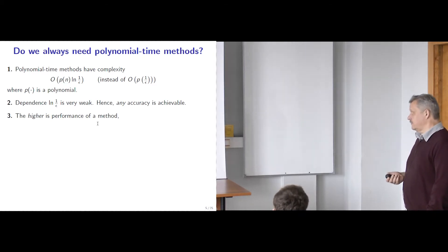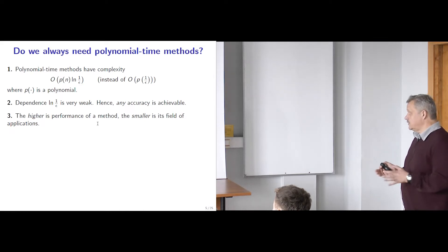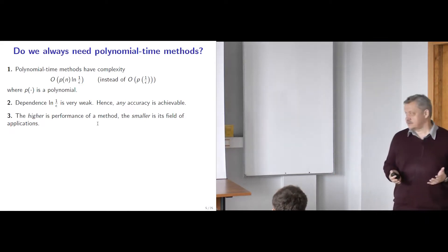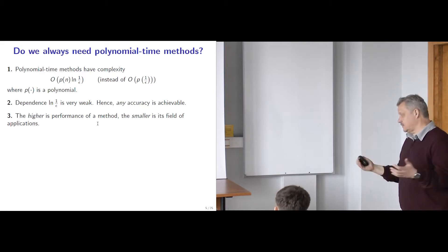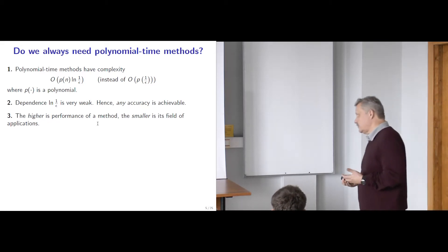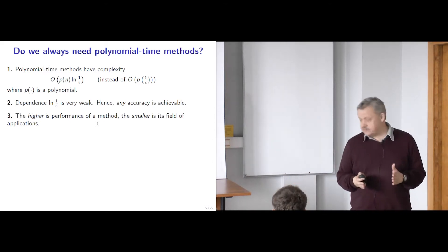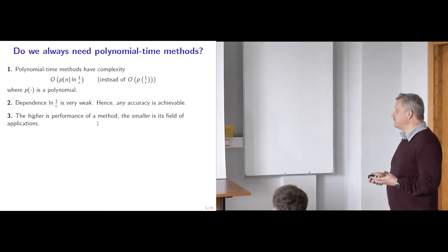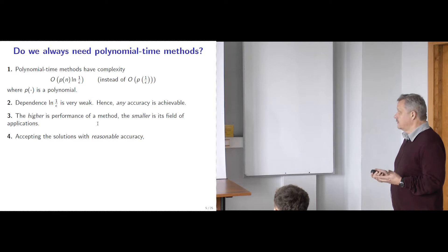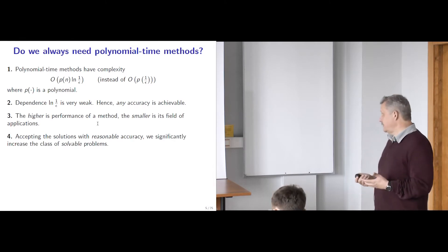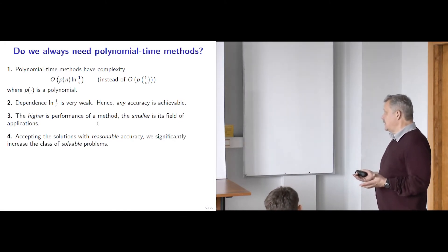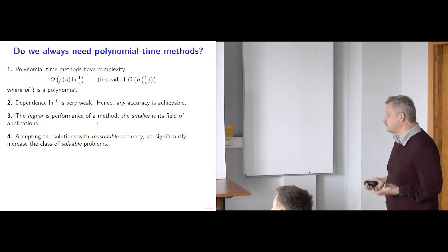From a general philosophical viewpoint, it is clear that the higher the performance of any method, the smaller the class of problems that can be addressed by it. If we have something extremely efficient, it is usually not very universal — the highest efficiency is achieved in quite a limited field of applications. Therefore, if we think more carefully before starting the solution process and understand what is the reasonable accuracy of our problem, we can significantly increase the class of efficiently solvable problems.